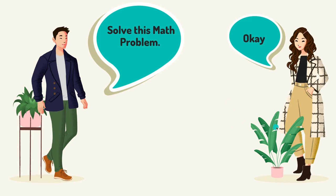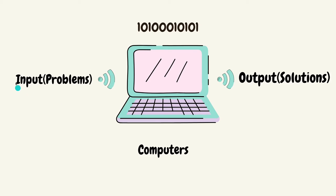Now let's go to the next slide. We are humans — we give input, which is a problem. If we can't solve a problem directly, we put it into the PC. The PC then converts it, and this conversion is done by a compiler, which converts it into a human-readable form.